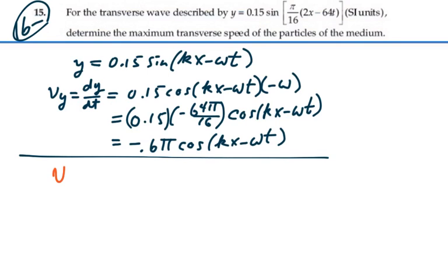If we want the maximum transverse velocity, we'll take the magnitude of this at the maximum possible value, which is going to be the magnitude of 0.6 pi, and then the magnitude of cosine kx minus omega t. The maximum possible value for the cosine function is 1, it can never be greater than 1.